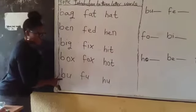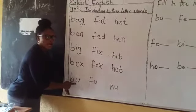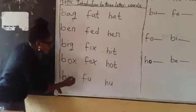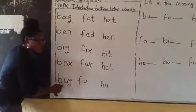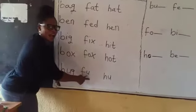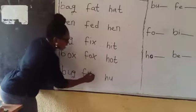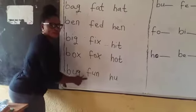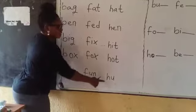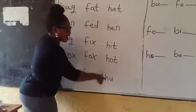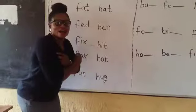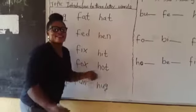Now let's go to u — that is umbrella. This is what? Bu. Then I add my consonant. It becomes what? Back. Again, back. This is fu. Then I add my consonant. It becomes what? Fan. Again, fan. This is my hu. Then I add my consonant. It becomes hard. Again, hard. So this is how to blend three-letter words.